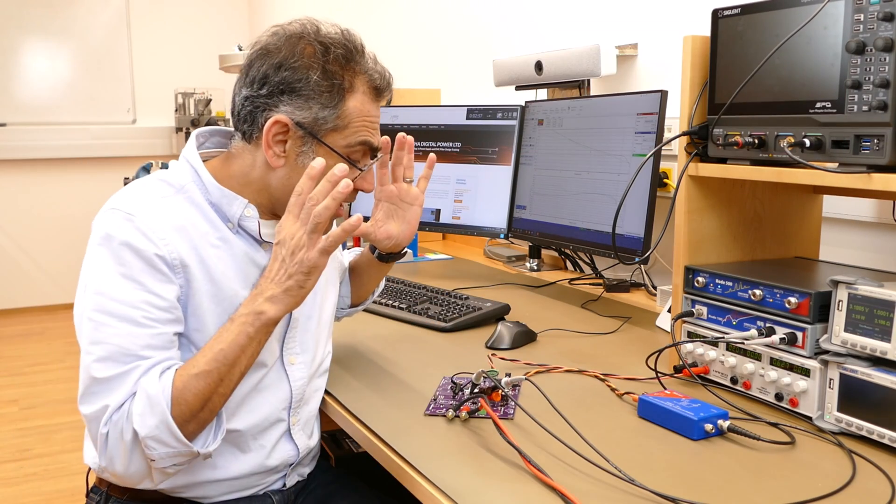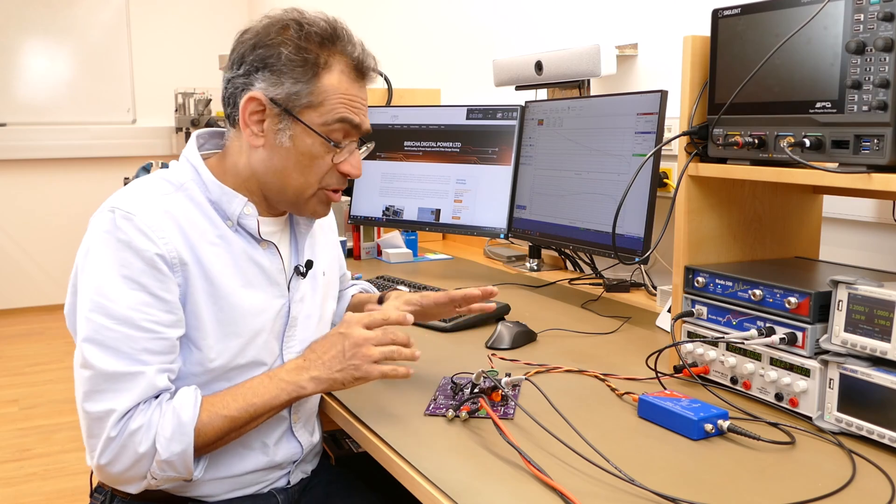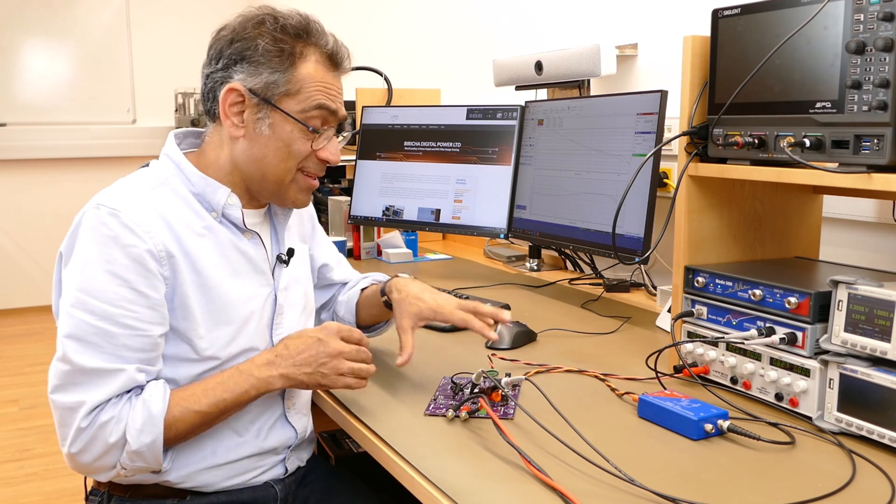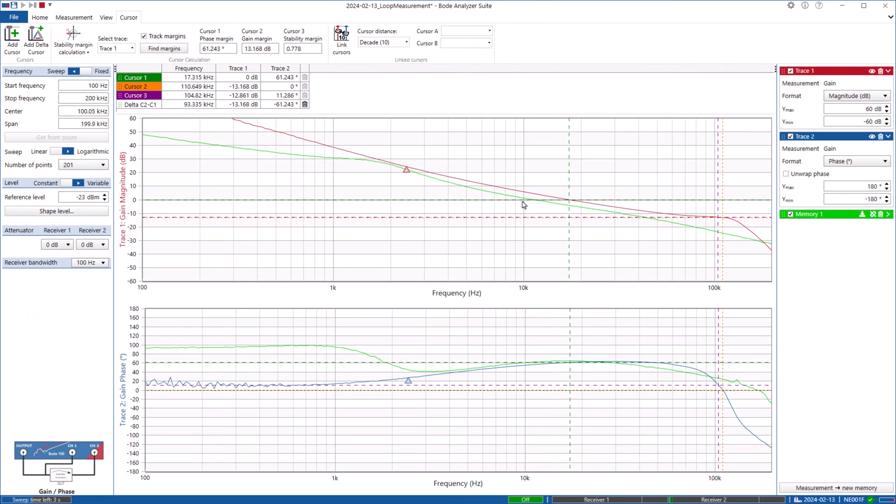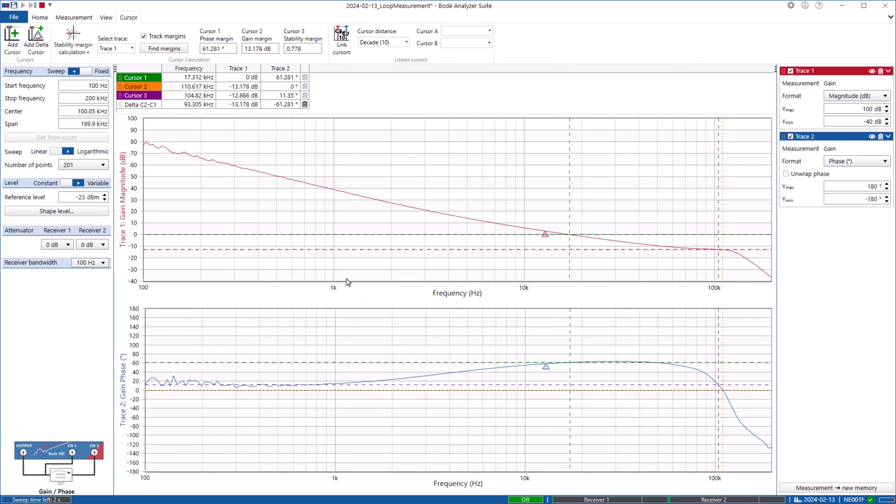Okay, so now I have reconnected my board. So I've removed the voltage mode one and this now is the current mode one that we are measuring. So I'm going to go back to the Bode output. Let me delete the voltage mode trace and let me optimize this so that we can see better.